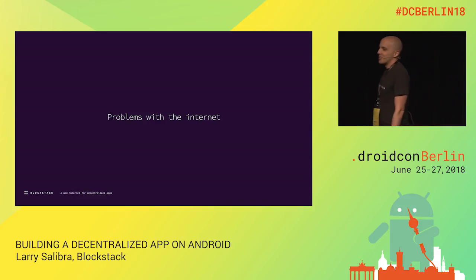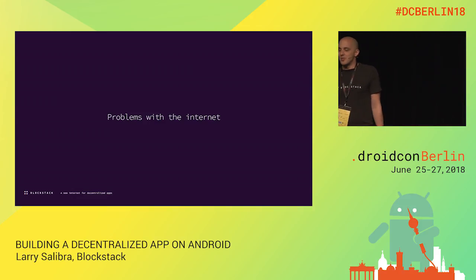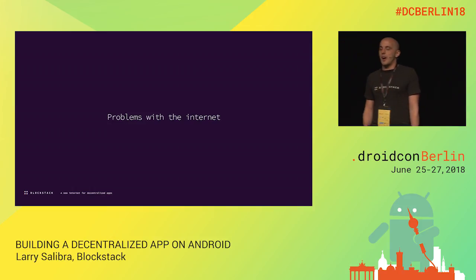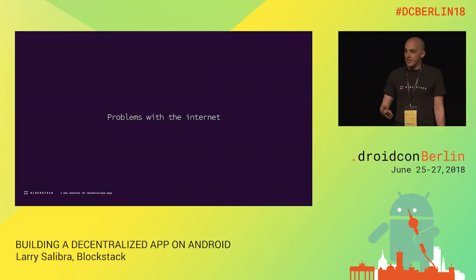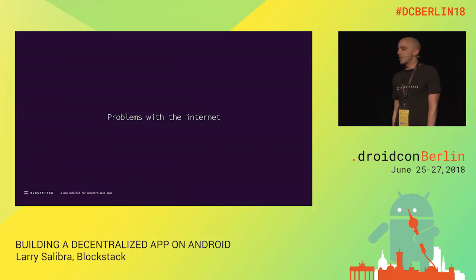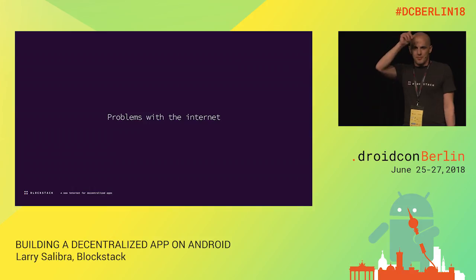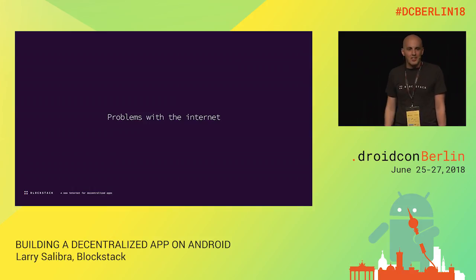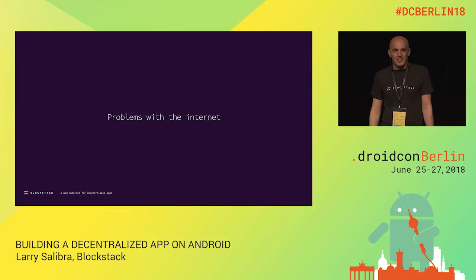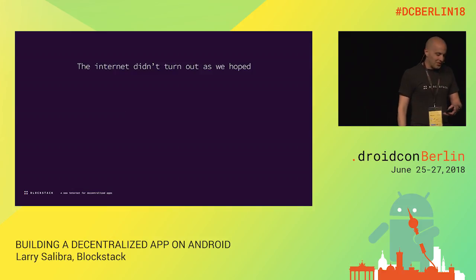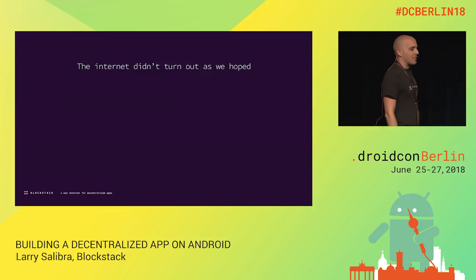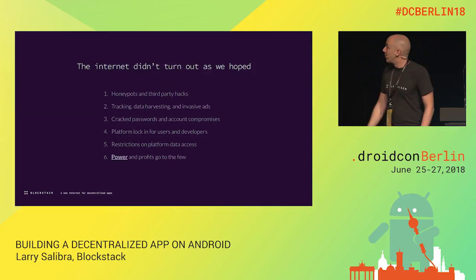You jumped exactly to one of my main points, which is power. Corporations have too much power, governments have too much power. And because of this we don't really have the free speech that we used to have. So these are some of the problems that I see with the internet.